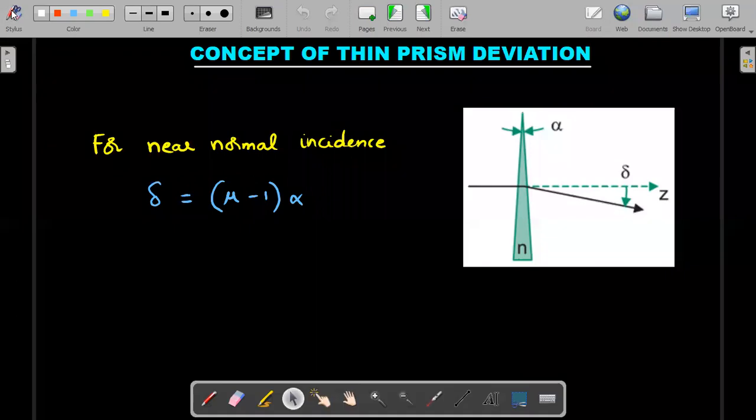So for this what we would be doing is we would be trying to actually prove the lens makers formula using the thin prism deviation.